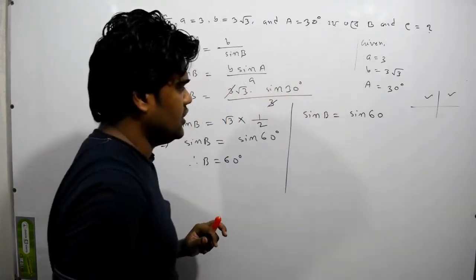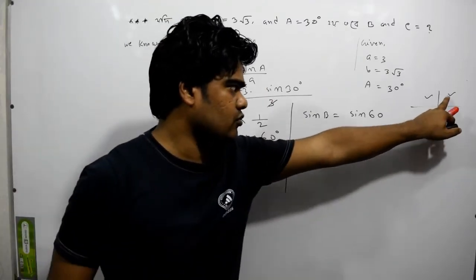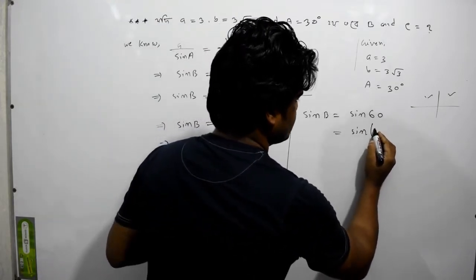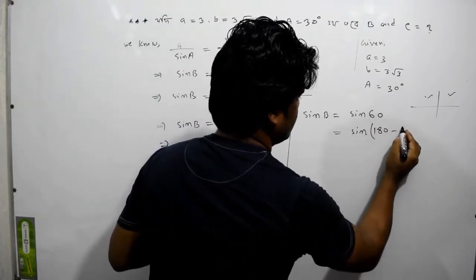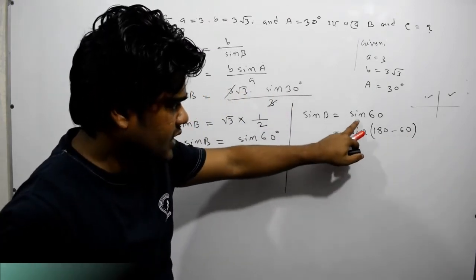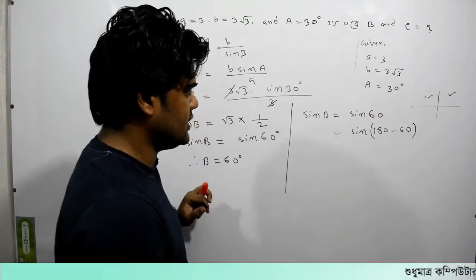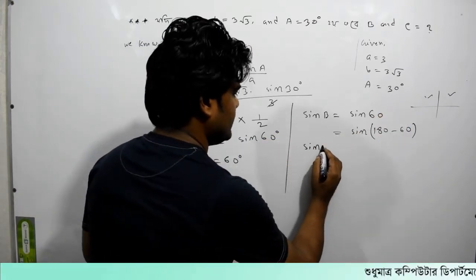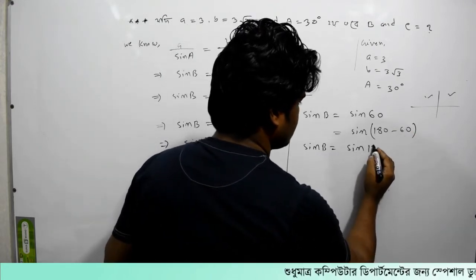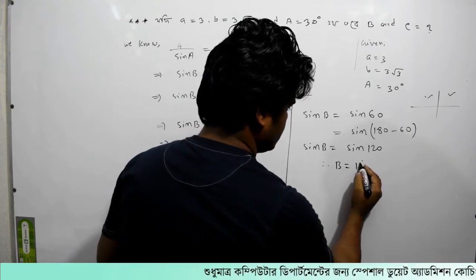If we think that sin B is positive in the second quadrant as well, then B could also equal 120 degrees, since sin 120 degrees also equals root 3 by 2. So B equals 60 degrees or B equals 120 degrees.